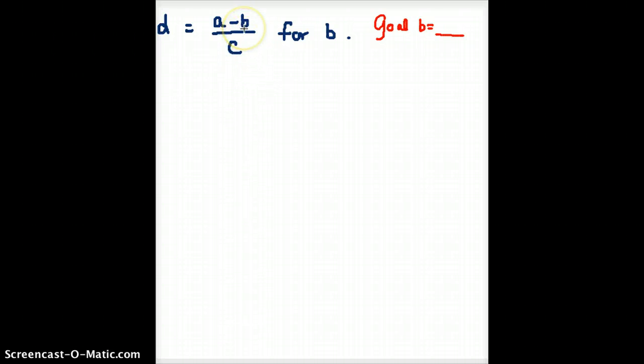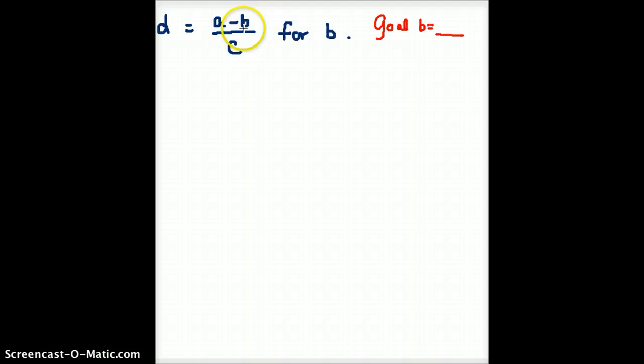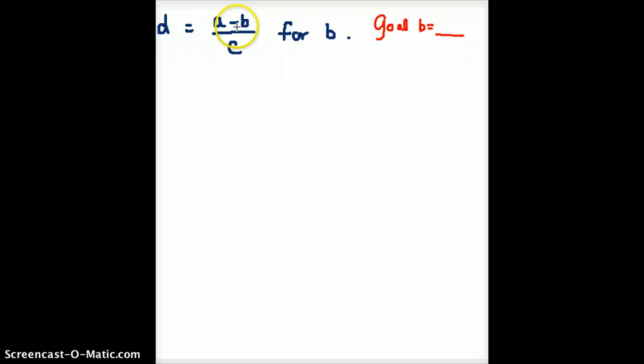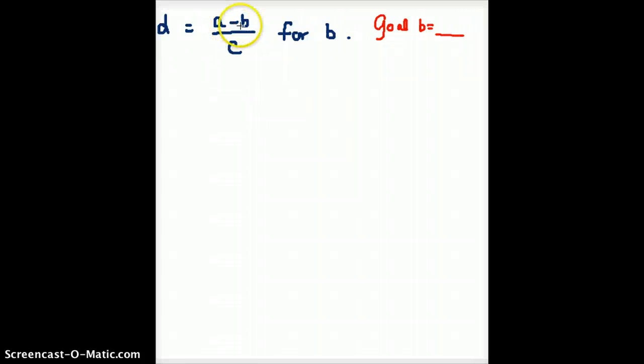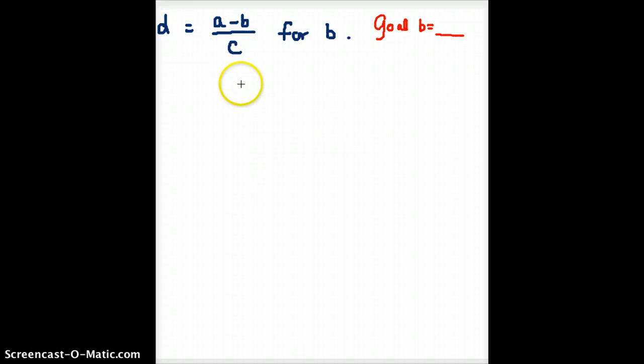Now there are two things, well there are three things that are happening to the B. One is that it is being divided by C. Another one is that A is up here with it. The B is subtracted from the A. And the negative sign is multiplied by the B. So we're going to have to undo each of those.